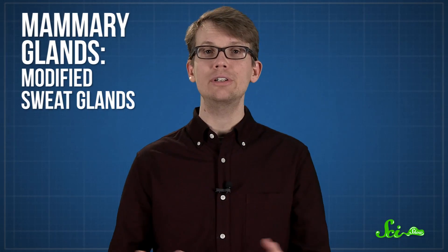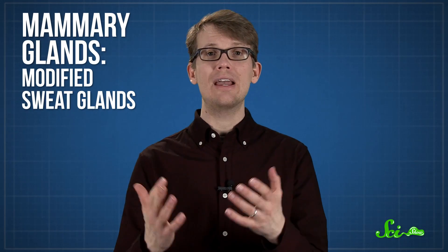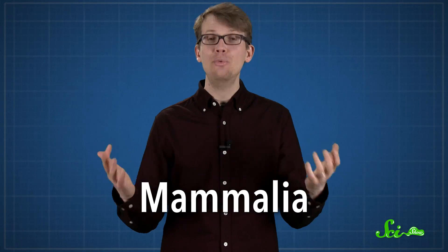Milk is produced by modified sweat glands in mammals called mammary glands. And it's used to give baby animals the nutrients they need before they can digest other food. All mammals produce milk. It's where we get the name Mammalia. And it's one of the three defining features of mammals, along with hair and three middle ear bones.